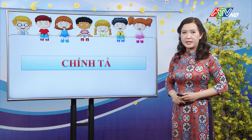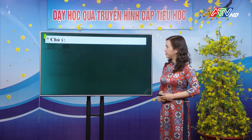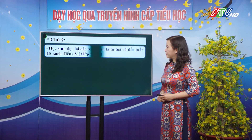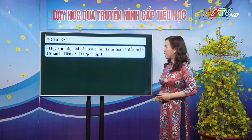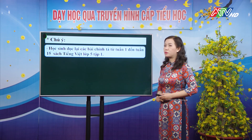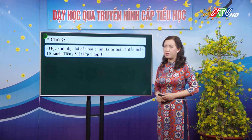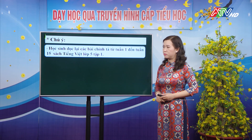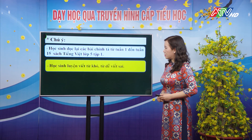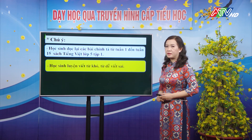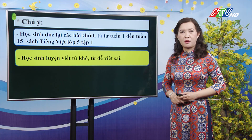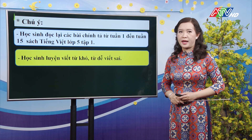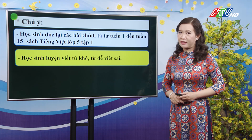Ở phân môn chính tả, các con cũng đọc lại các bài chính tả từ tuần 1 đến tuần 15 ở sách tiếng Việt lớp 5 tập 1. Các con sẽ luyện viết từ khó, từ dễ viết sai, từ dễ nhầm lẫn vào vở nháp, hoặc viết lại toàn bài chính tả càng tốt.